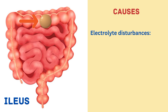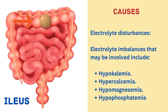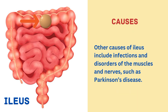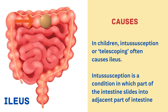The next cause is electrolyte disturbances. Electrolyte imbalances that may be involved include hypokalemia, hypercalcemia, hypomagnesemia and hypophosphatemia. Other causes of ileus include infections and disorders of the muscles and nerves, such as Parkinson's disease. In children, intussusception or telescoping often causes ileus — a condition in which part of the intestine slides into an adjacent part of the intestine.